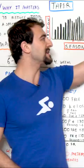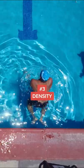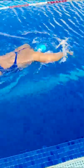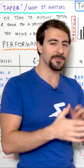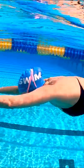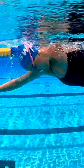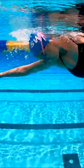The third variable to consider is training density. Density is defined by the amount of swimming that you do inside of a given period of time — for example, swimming 1000 meters in a 30-minute session versus swimming 1500 meters in that same 30-minute session.